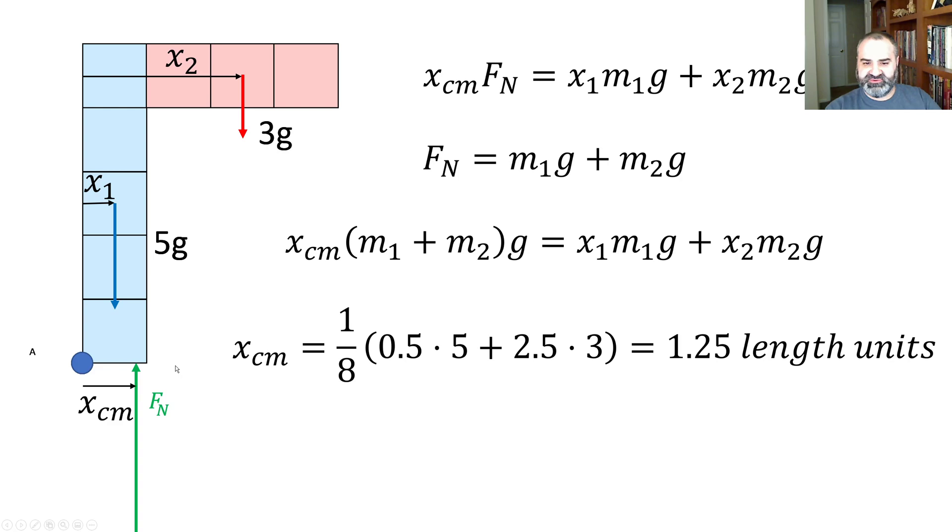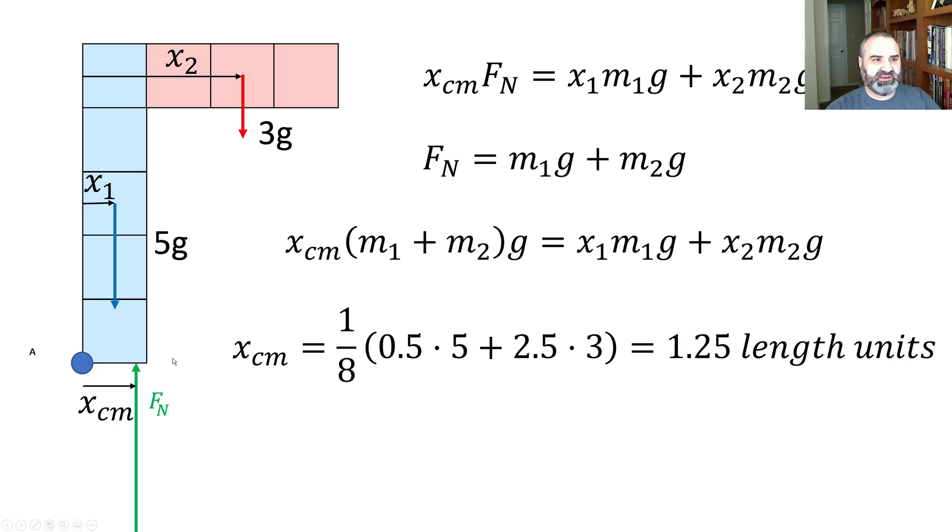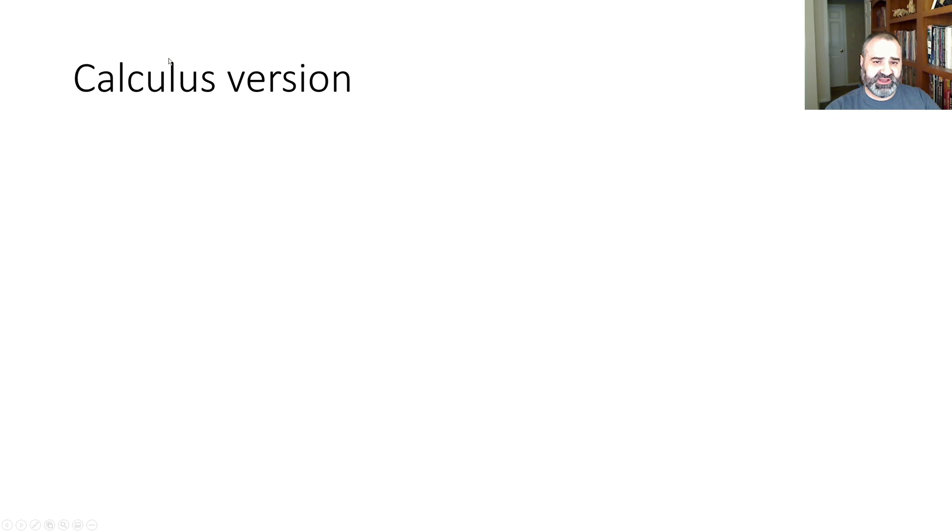Wait, 1.25 length units is over here to the right of the bottom block. Well, what's that mean? If I tied a rope up here 1.25 length units over, no problem. This block will hang.